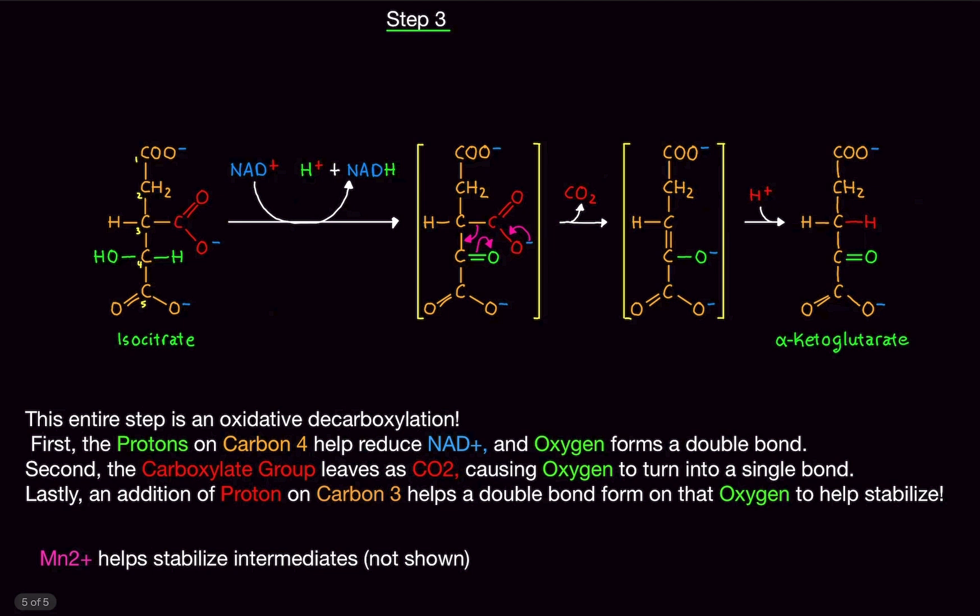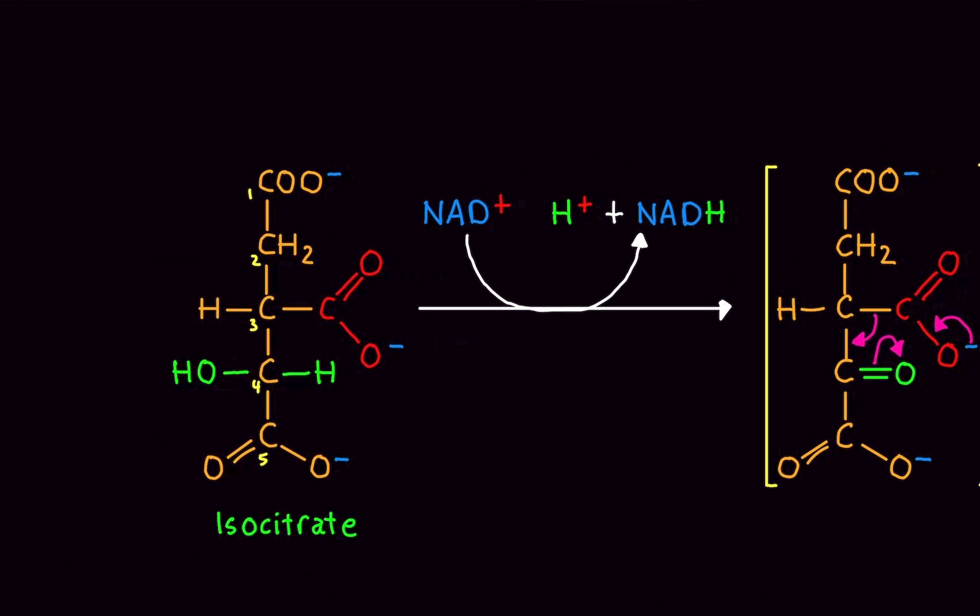Step three. This looks crazy. I know, but I promise you it's actually quite easy. Now everything's color coded. So it makes it very easy to understand. Here's what's going to happen. We have the isocitrate, right? We just created. This is going to stay fine. Normal, right? Nothing's going to happen.